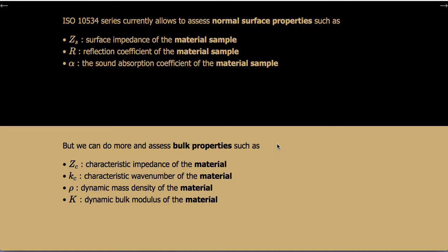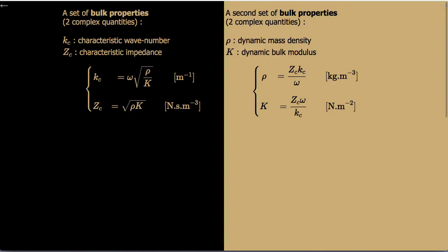However, we can do much more with an impedance tube: we can assess bulk properties such as the characteristic impedance, the characteristic wave number, or equivalently the dynamic mass density Rho and the dynamic bulk modulus K. You choose one set of quantities — either characteristic wave number and characteristic impedance, or dynamic mass density and dynamic bulk modulus — and you can deduce one set from the other.